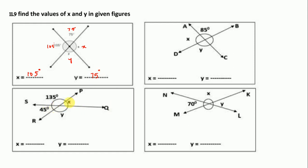We follow the same rules. x = 45 and y = 135 degrees. We can find y by vertically opposite angle, but x is not directly given. So for that we use the straight angle or supplementary angle method. Here x and 85 are on BD, which is a straight line — that is 180 degrees. So we do 180 minus 85, which is 95. So x = 95 and y = 85.